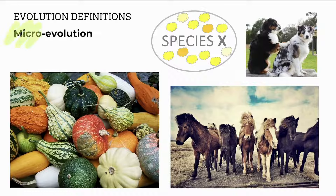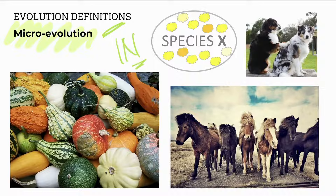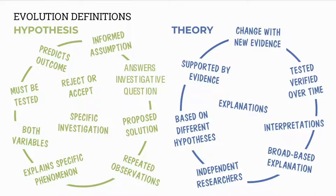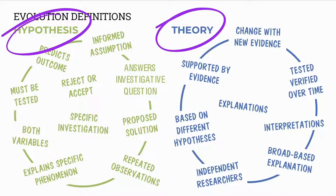Microevolution, on the other hand, involves changes within a species. It's a smaller scale of evolution, changes over shorter periods of time, and we observe these in the results of scientific investigations. We can also look later, in future videos, at differences between definitions, for example, hypothesis and a theory.